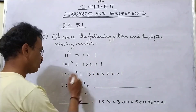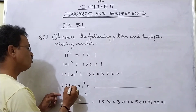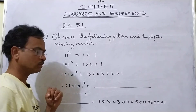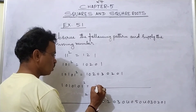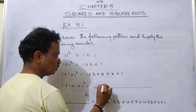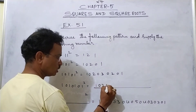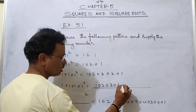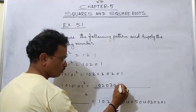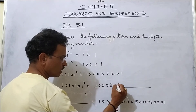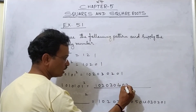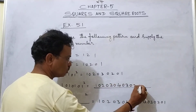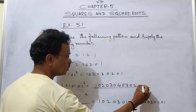So in the same way, next 1, 1, 1, 1 — that is 4 times. So how to write here? 1, 0, 2, 0, 3, 0, 4 — then before 4, what is there? 0, 3, 0, 2, 0, 1.